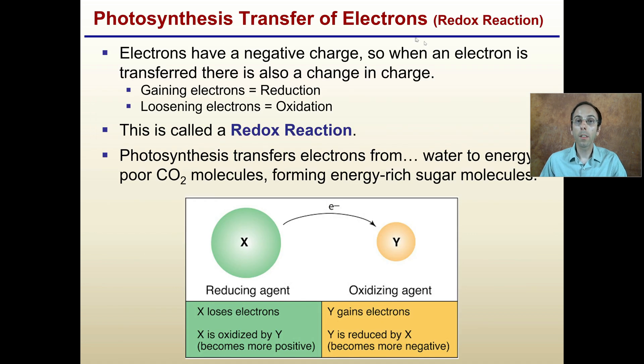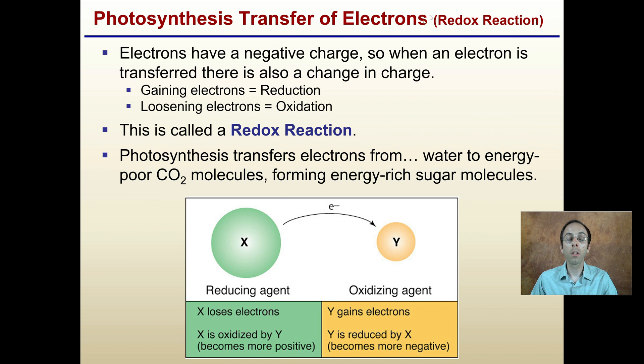Photosynthesis is a transfer of electrons, and this is what's termed a redox reaction. Since electrons have a negative charge, when an electron is transferred, there's also a change in charge. Gaining electrons means you're being reduced, losing electrons is called oxidation. If you think about gaining a negative charge, your total charge is going to become more negative, it's going to be reduced. This is how it gets the term redox reaction, reduction and oxidation.